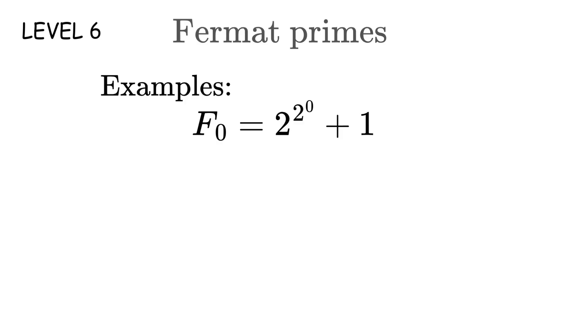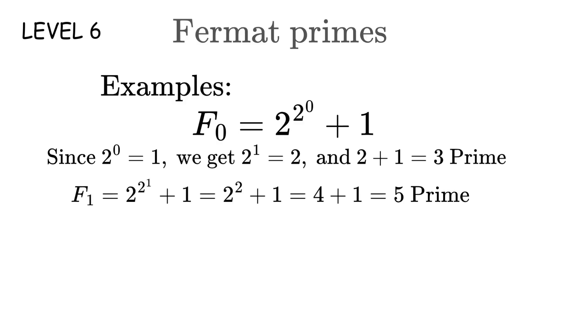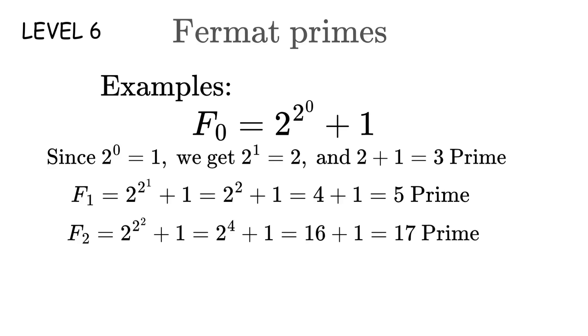Let's calculate them. F_0 equals 2 raised to the power of 2 raised to the power of 0 plus 1. So 2 raised to the power of 0 is 1. And 2 raised to the power of 1 is 2 plus 1 equals 3. Prime. F_1 equals 2 raised to the power of 2 raised to the power of 1 plus 1. That's 2 raised to the power of 2 plus 1, which is 4 plus 1 equals 5. Prime. F_2 equals 2 raised to the power of 2 raised to the power of 2 plus 1. That's 2 raised to the power of 4 plus 1, which is 16 plus 1 equals 17. Prime. F_3 equals 2 raised to the power of 2 raised to the power of 3 plus 1. That's 2 raised to the power of 8 plus 1, which is 256 plus 1 equals 257. Prime. F_4 equals 2 raised to the power of 2 raised to the power of 4 plus 1. That's 2 raised to the power of 16 plus 1, which is 65,536 plus 1 equals 65,537. Still prime.